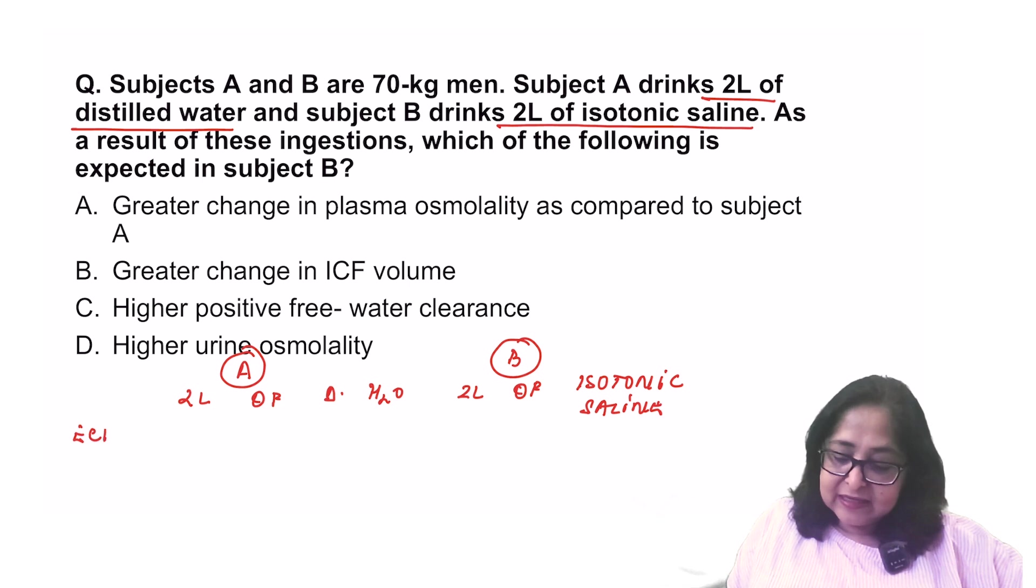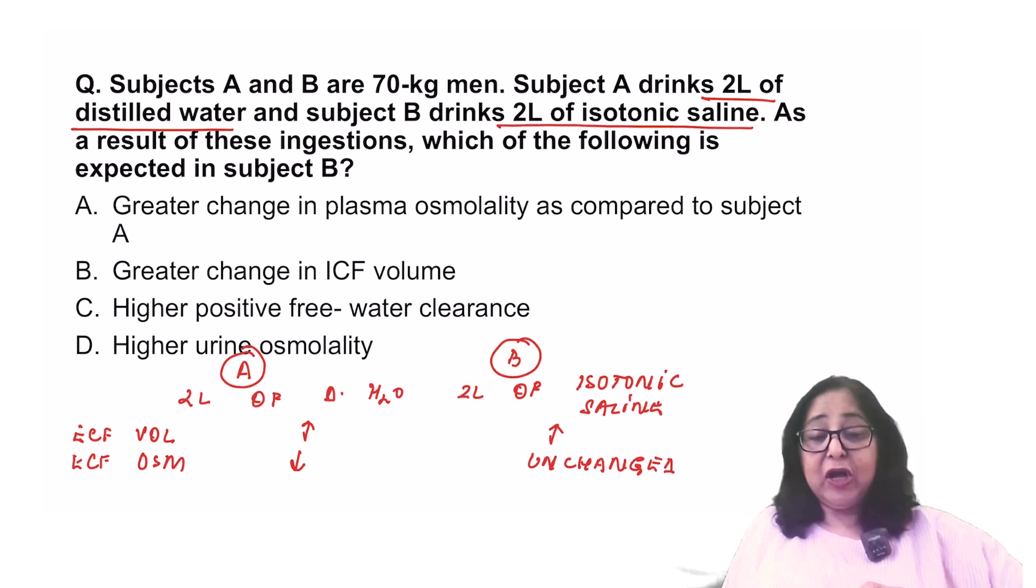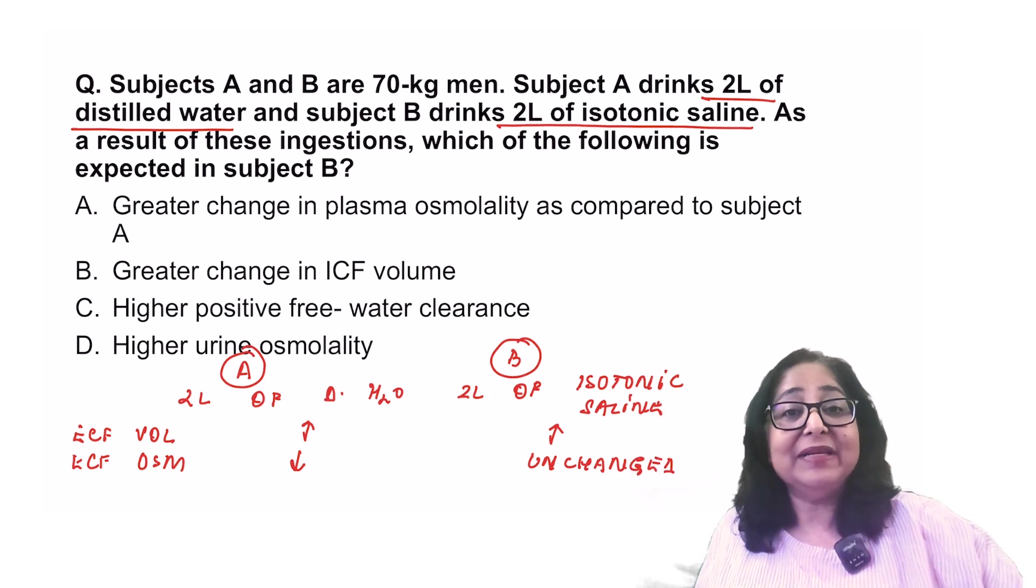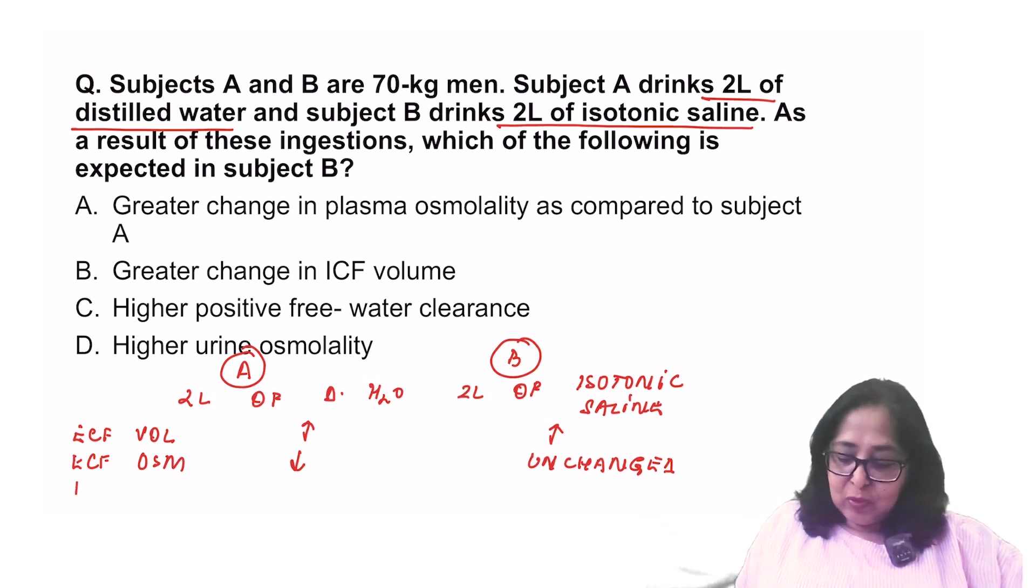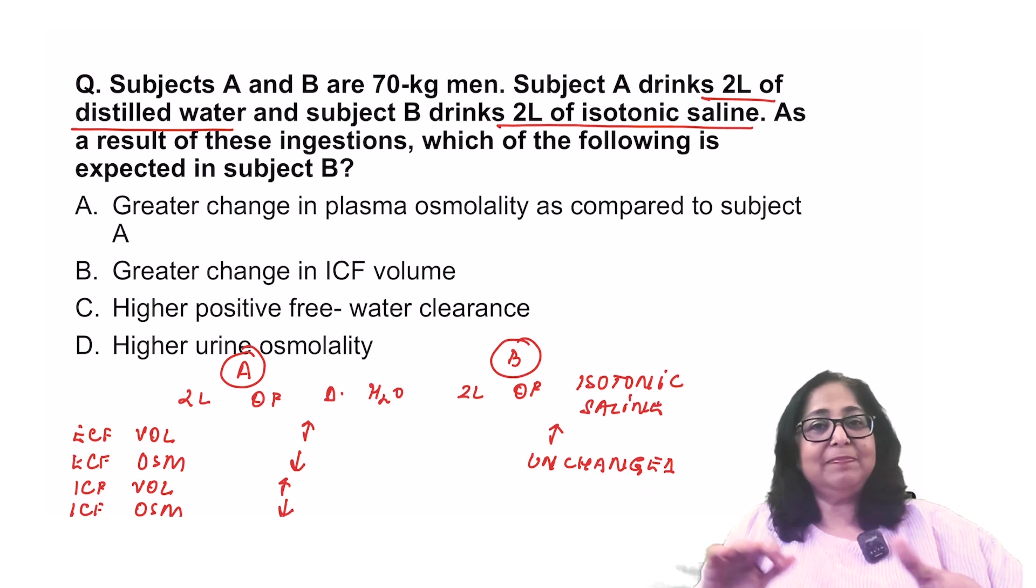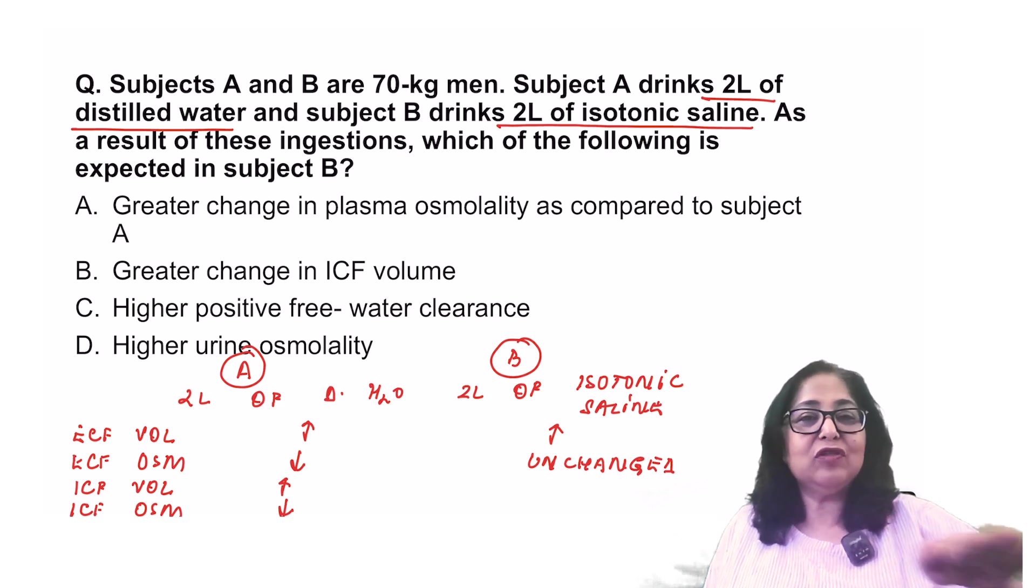Number one, ECF volume increases in both. ECF osmolality reduces in A but is unchanged in B. Now, because the ECF has now become dilute, water starts moving from ECF to ICF. So, what will happen to ICF volume? Increases. ICF osmolality reduces till it becomes equal to the ECF osmolality. Water will move from ECF to ICF till ECF and ICF osmolality is the same.